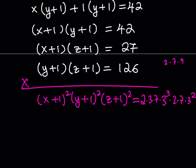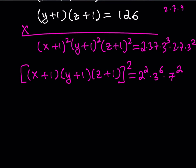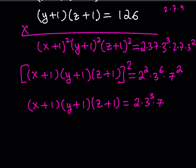Note that x, y, z are all positive numbers — though we'll find both solutions. Taking the square root of both sides: the left side becomes (x plus 1)(y plus 1)(z plus 1), and the right side is the square root of 2 squared times 3 to the sixth times 7 squared, which equals 2 times 3 cubed times 7. Let's call this equation number 7. We also have equation 4: (x plus 1)(y plus 1) equals 42; equation 5: (x plus 1)(z plus 1) equals 27; and equation 6: (y plus 1)(z plus 1) equals 126.